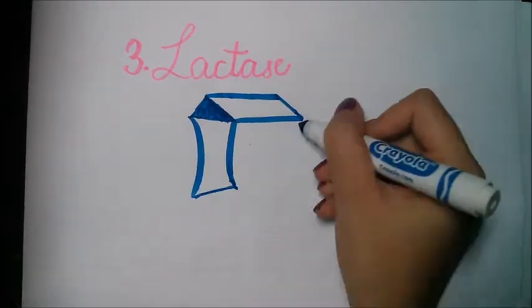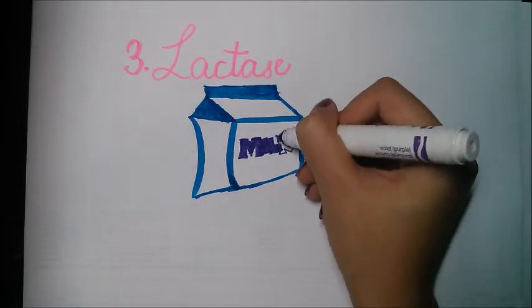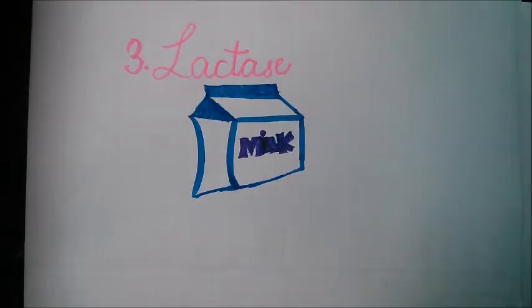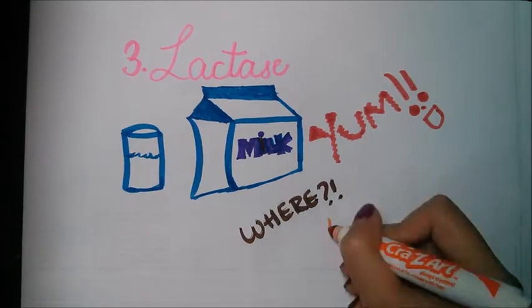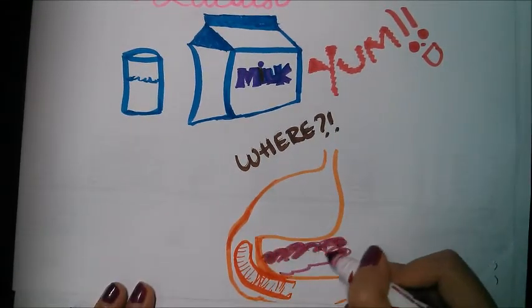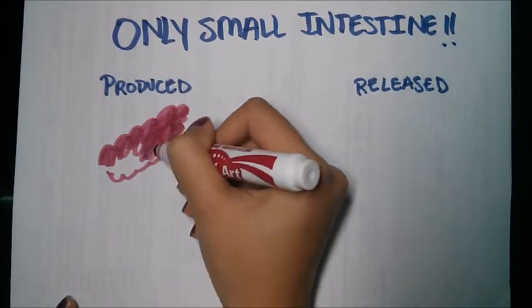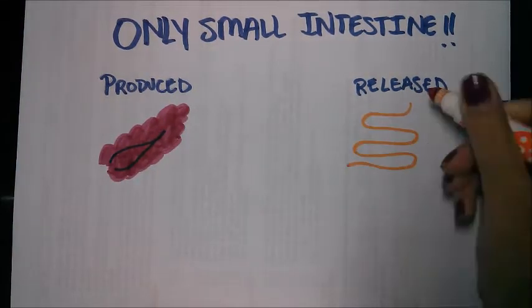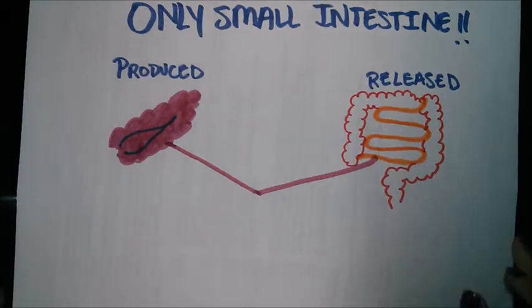Lactase is an enzyme that is necessary for the breakdown of lactose in dairy products and it is produced in the duodenum of the small intestine. Production of this enzyme usually decreases with age and in some cases where the enzyme is absent, it leads to a condition known as lactose intolerance. Many of the enzymes produced in the pancreas are released in the small intestine, including amylases for carbohydrate digestion, trypsin for protein degradation, and lipases for fat digestion.